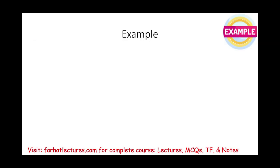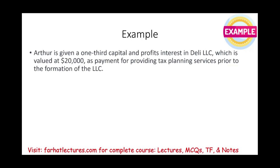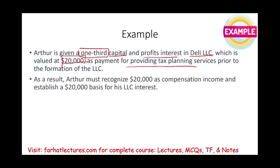Let's look at an example. Arthur was given a one-third capital and profit interest in Delhi LLC, with one-third valued at $20,000, because this payment was given to him for providing tax planning services to Delhi. As a result, Arthur would recognize $20,000 in compensation income — basically a W-2 or 1099. And Arthur has a basis in the LLC of $20,000, which is the value of the services.